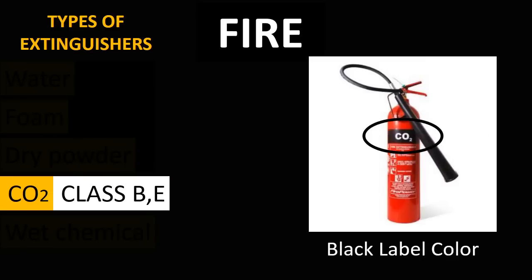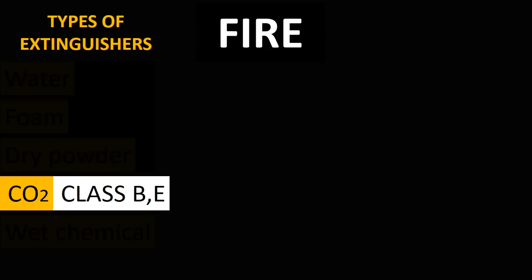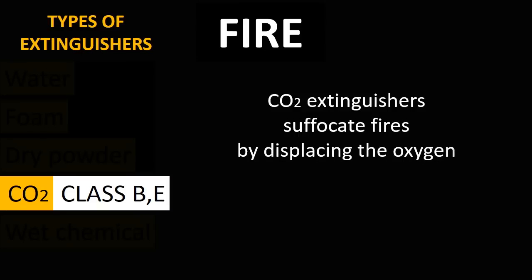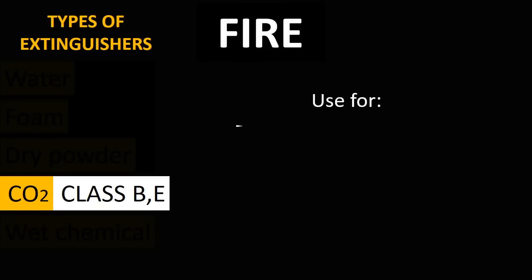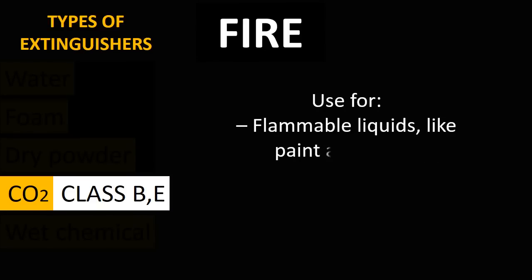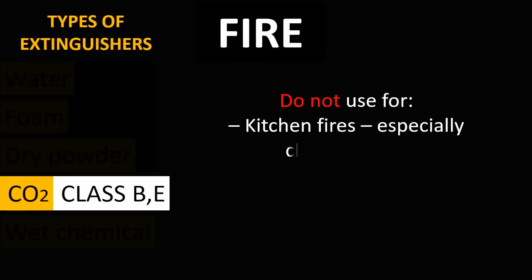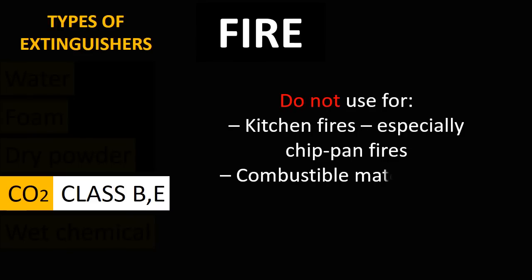Carbon dioxide fire extinguishers have a black label color. They suffocate fires by displacing the oxygen. They are used for flammable liquids like paint and petrol, and on electrical fires. Do not use carbon dioxide type fire extinguishers for kitchen fires, combustible materials, or flammable metals.